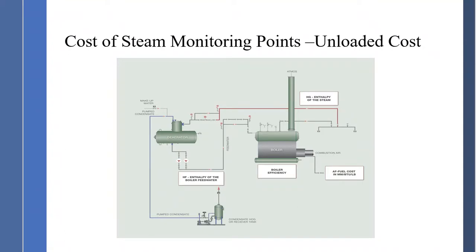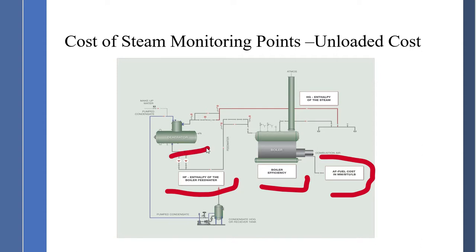Here we have a diagram that gives us the steam costs. The four inputs are: fuel costs, boiler efficiency, the water coming in from the deaerator headed to the boiler room, and the steam going out of the boiler. So there are our four factors that we're going to put into the steam cost calculation.